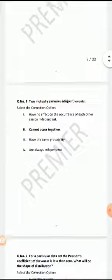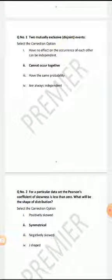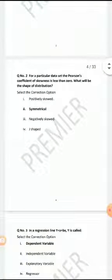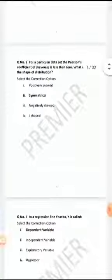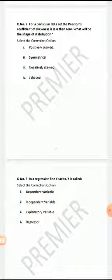Today important questions of midterm quiz. Two mutually exclusive disjoint events - the correct answer is cannot occur together. For a particular data set, the Pearson coefficient of skewness is less than zero. What will be the shape of distribution? The correct answer is negatively skewed.